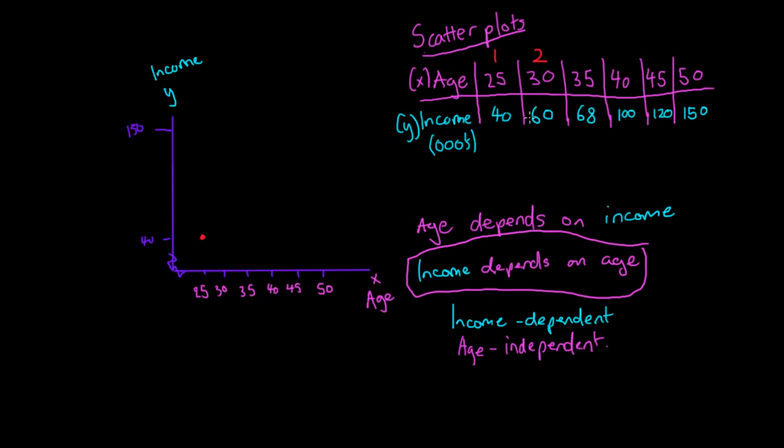For the second observation, we repeat the process. We go to 30, and we know we have an income of 60. We go up—that would be 40, so 60 would be a little bit above that, maybe about there. That's our second observation.